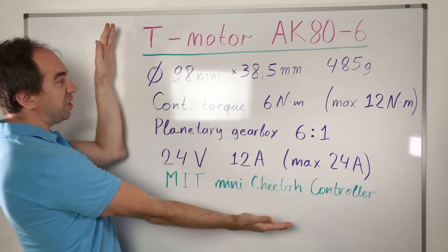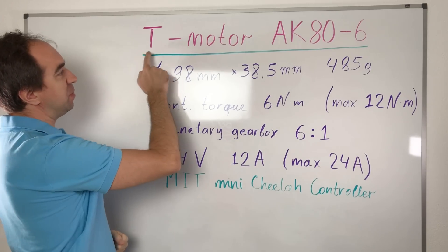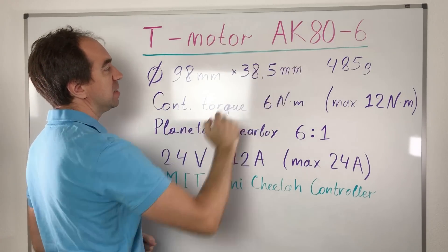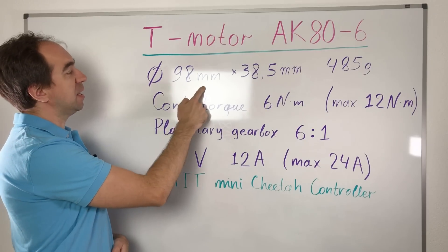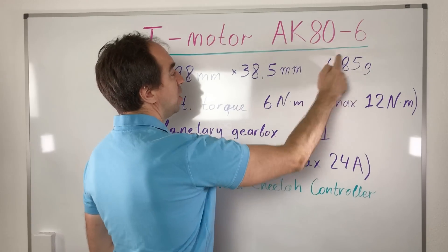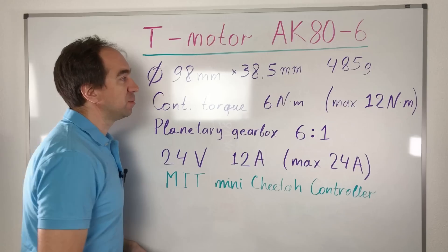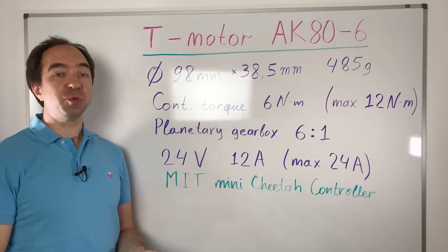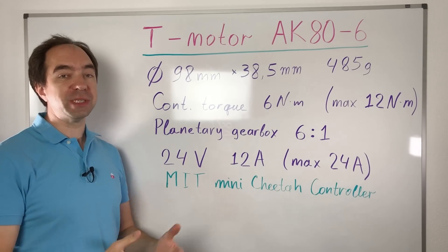Here are the parameters of these actuators. The name is T-Motor AK-80-6. The size is less than 10 centimeters in diameter and less than 4 centimeters in length. It's very lightweight, less than 500 grams. Just to remind you, the other actuators which I reviewed were all over 600 grams.